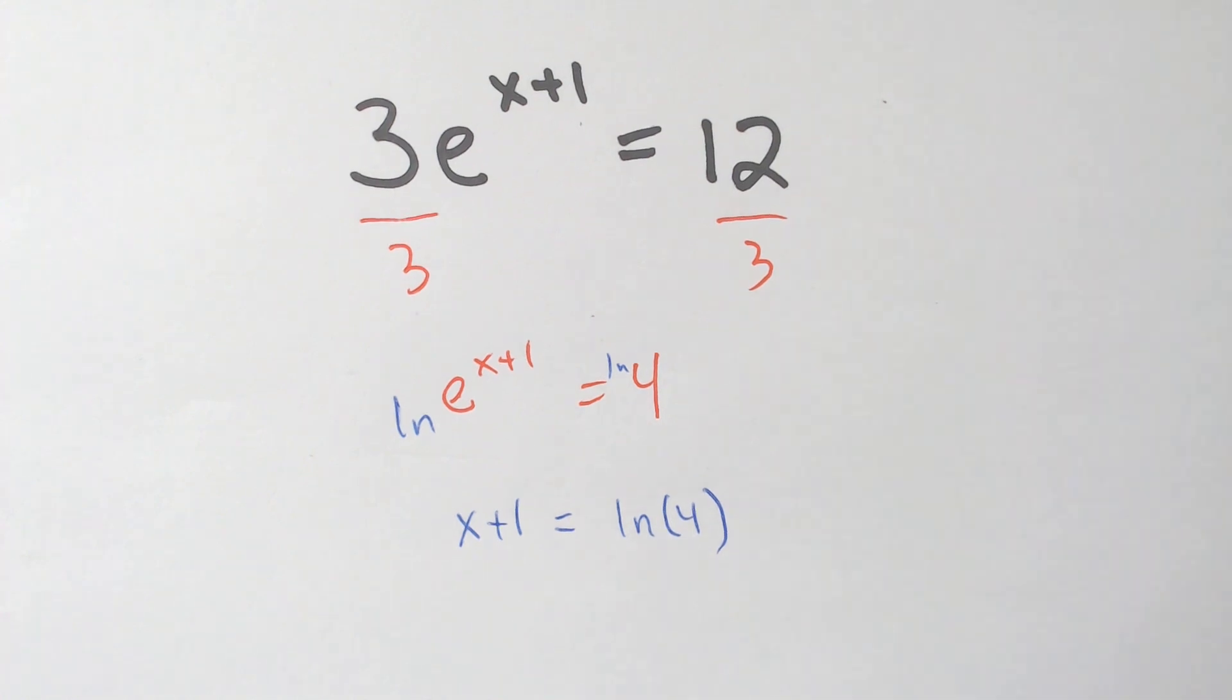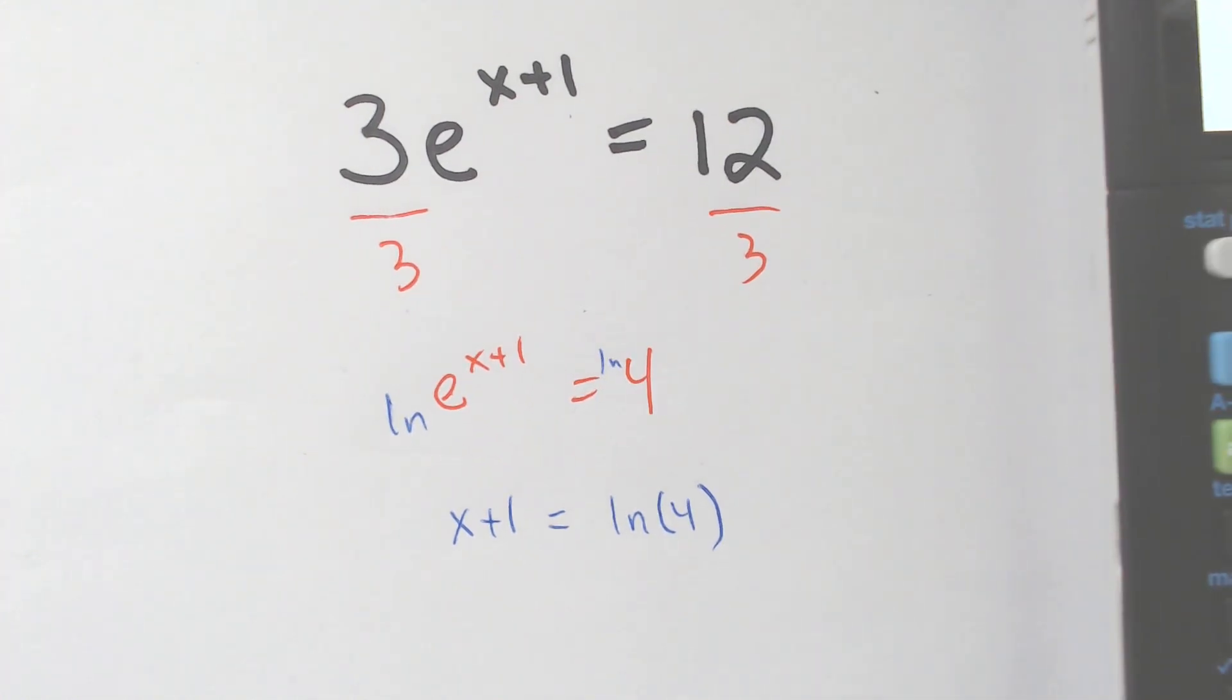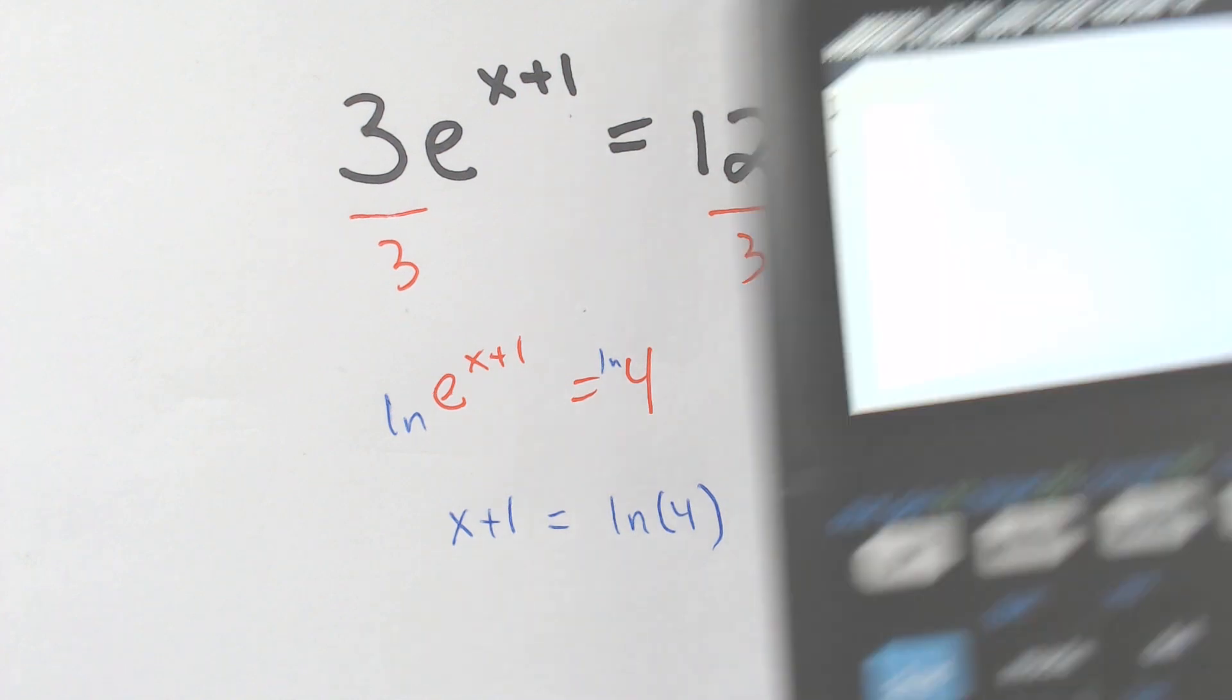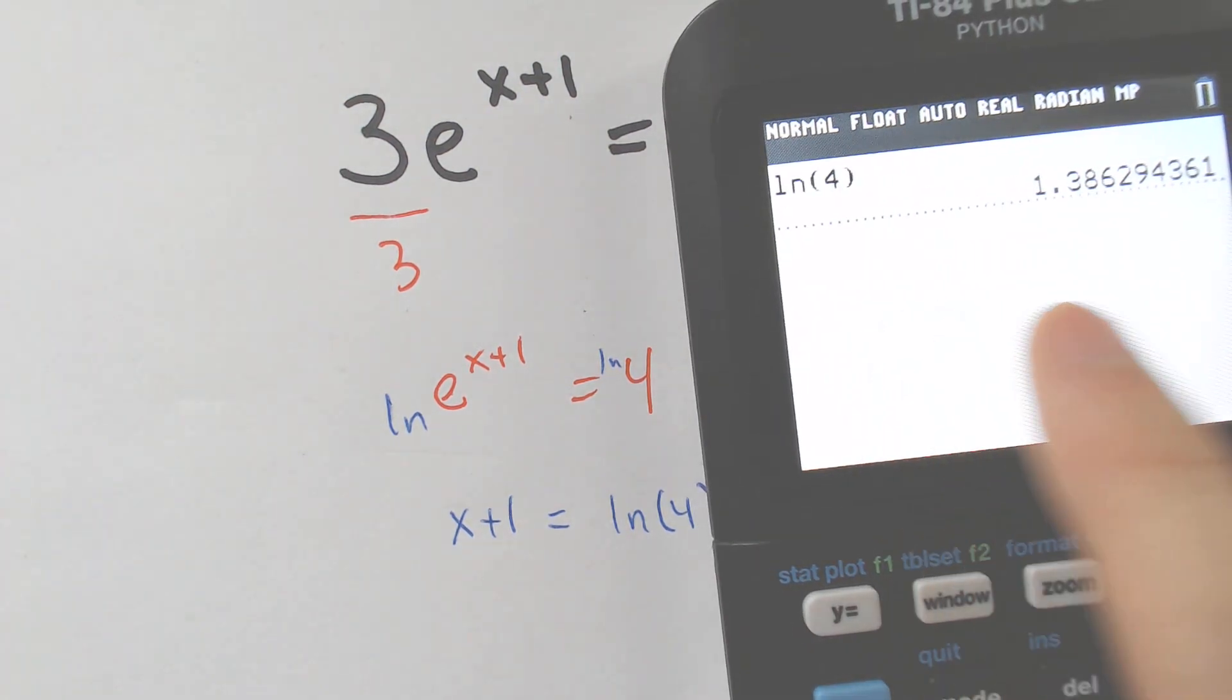Now, if this LN of 4 gave me a negative number, that would be okay. It's if you tried typing in LN of negative 4, that it would not be okay. So LN of 4 is 1.38, but let me show you.